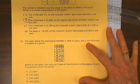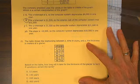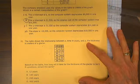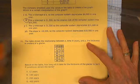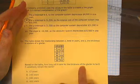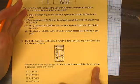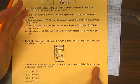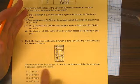The table shows the relationship between x, the time in years, and y, the thickness in meters of a glacier. Based on the table, how long will it take for the glacier to reach a thickness of zero or melt away if conditions remain the same?